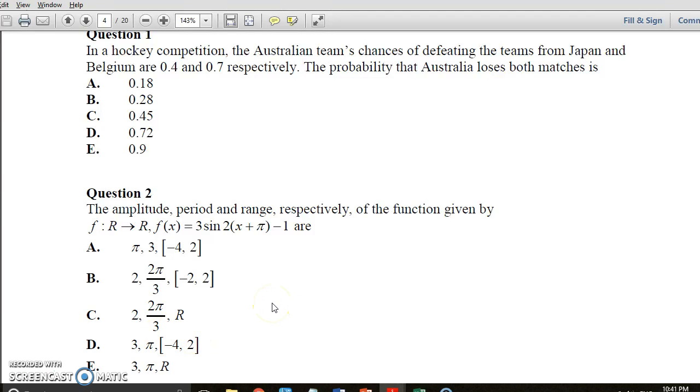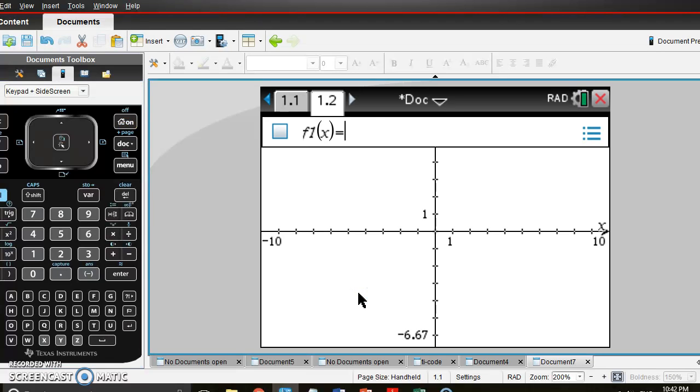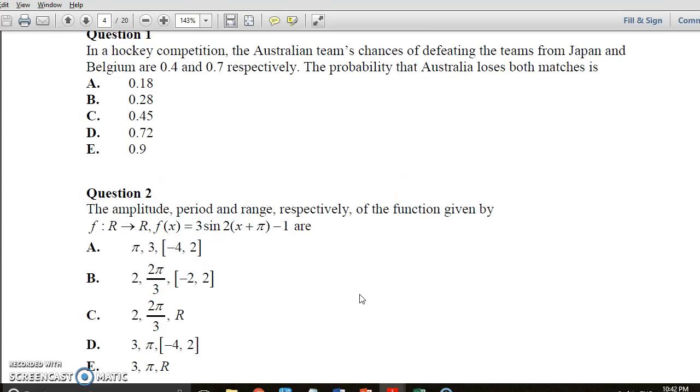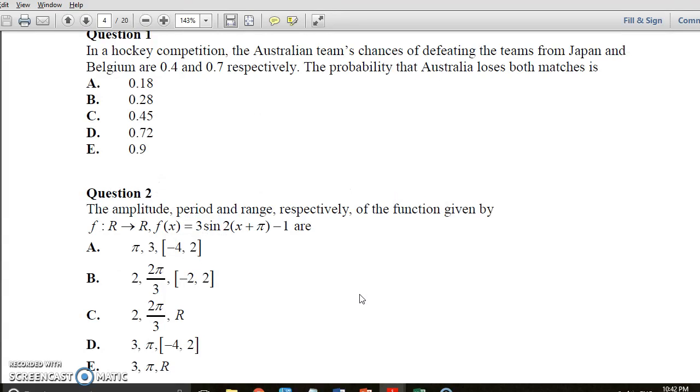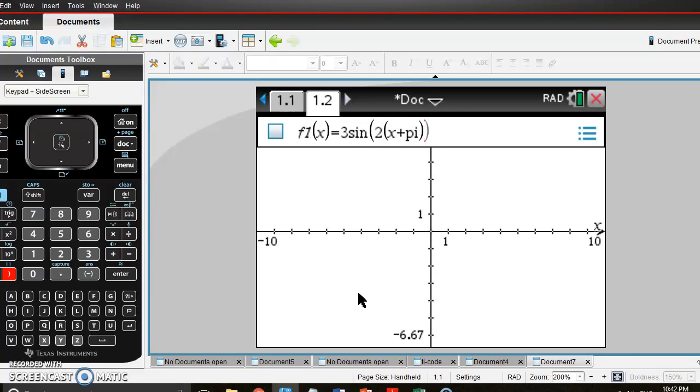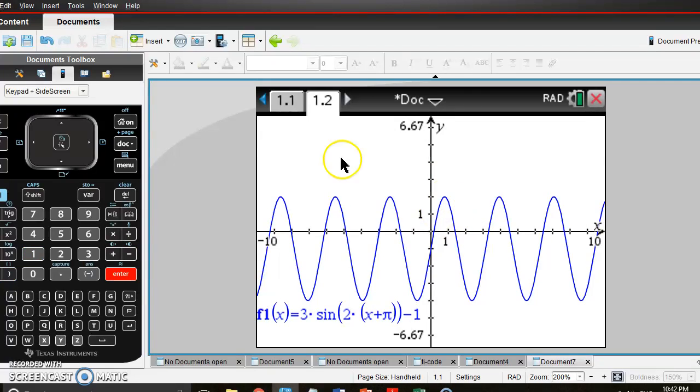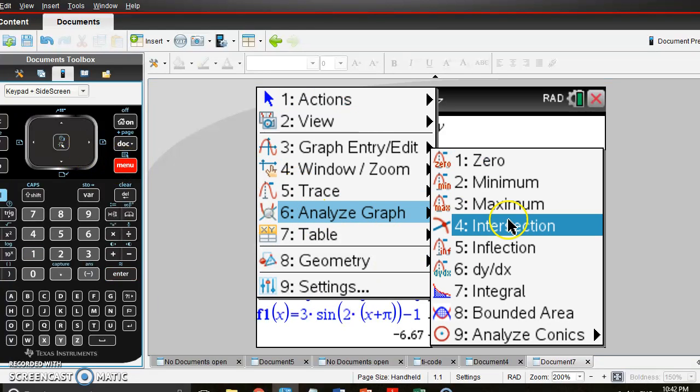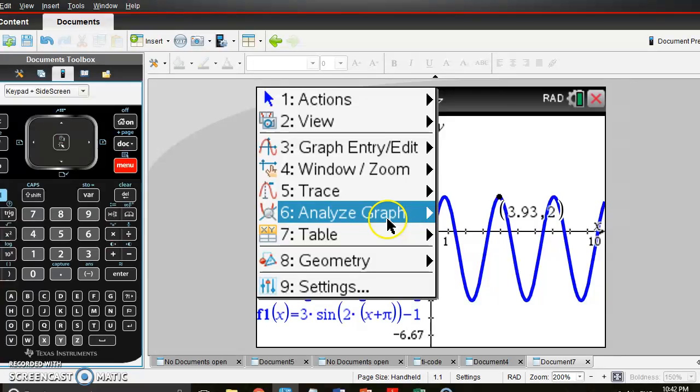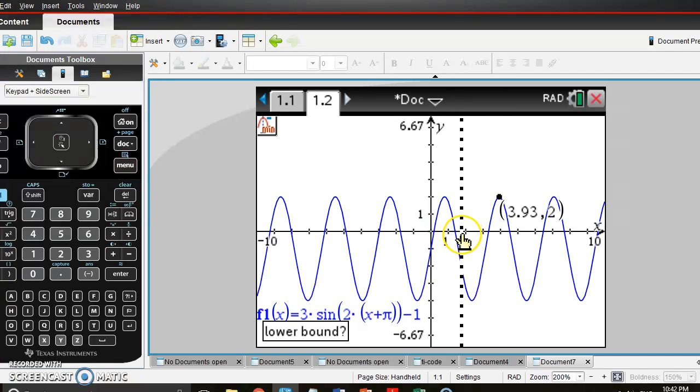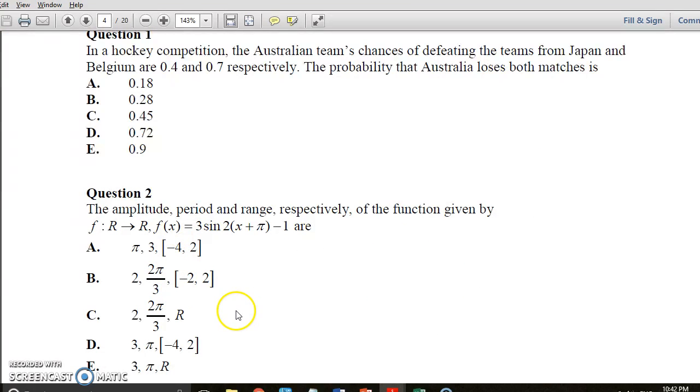My advice to you if you can't work it out, just button mash it on CAS. So I'll be saying we're going to graph that. We'll go to home, graph that. And we'll say three sine, uh, three times sine open brackets two open brackets x plus pi minus one, close off brackets minus one.